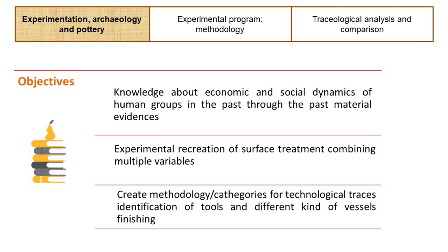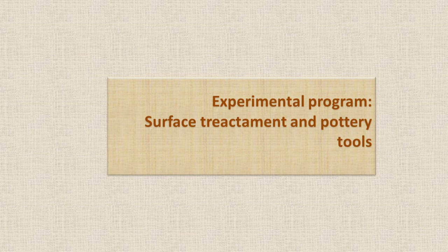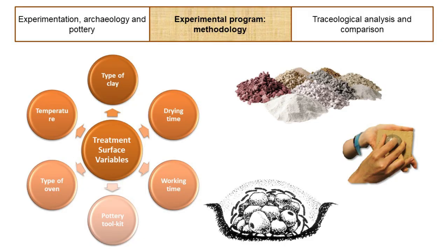Specifically, recreating surface treatment combining many variables. In the second section, we will explain in detail the design and creation of the experimental program, as well as the methodology for data collection and sample analysis. But before explaining the methodology, let us define the subject of the study. Surface treatment refers to a series of actions in the production of ceramic vessels in which the internal and external walls are smoothed and prepared for a functional or aesthetic purpose. Surface treatment can be separated from or connected with the procedure to create the shape of the recipient, depending on whether it is carried out during or after modeling the shape, or even after firing.